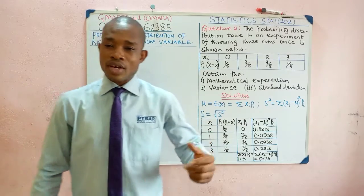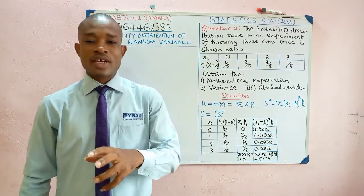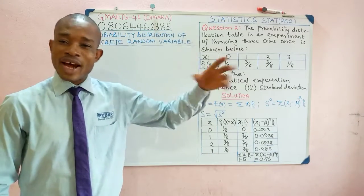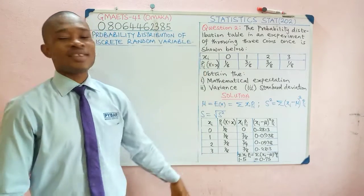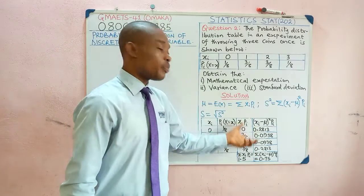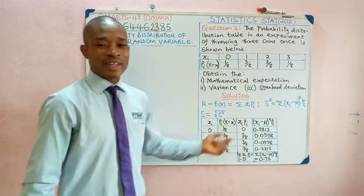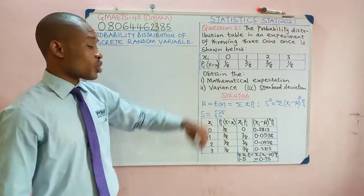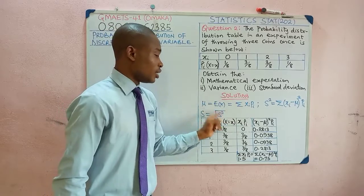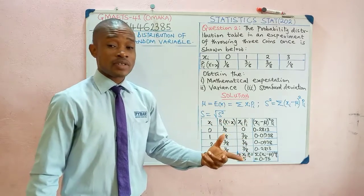This is quite straightforward. The idea of what you did when we treated measures of dispersion can guide you a lot here. Guided by the formula, we can compute a table — though it's not absolutely necessary. You can work straight through and get the results. For the expected value, which is the mean, it's summation xi times pi. That's the formula we established.